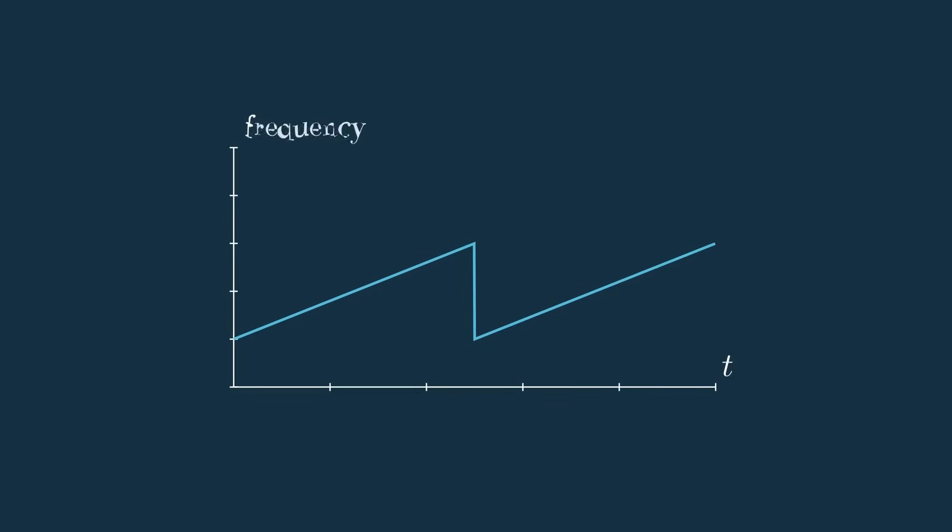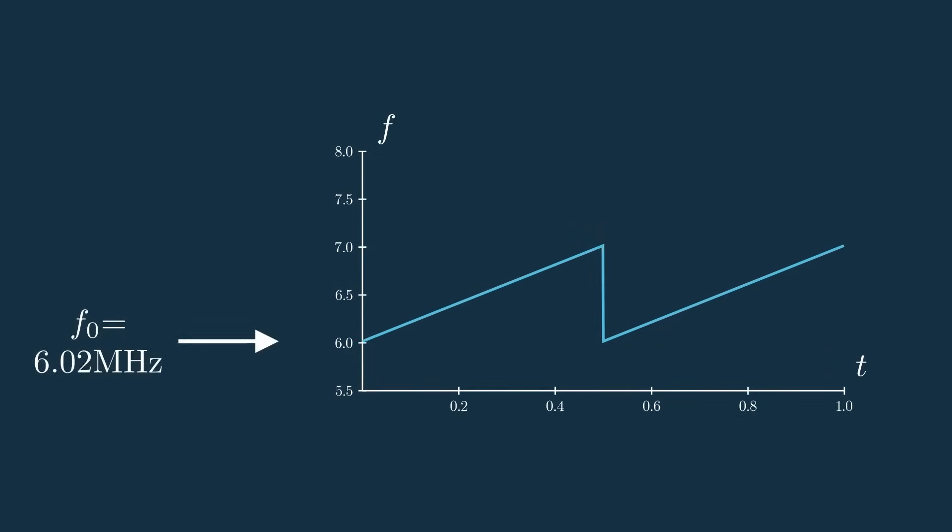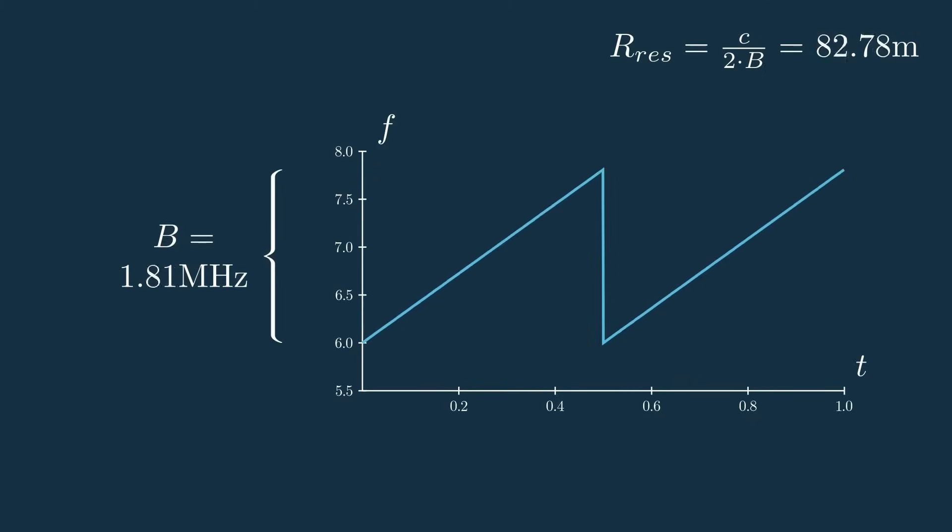Looking at this sawtooth plot, we have the frequency of our signal as a function of time, and I'll add some dummy units to illustrate the point. This ramp is also called a chirp, and how it's set has a large impact on our system. We can configure the chirp in a few different ways to have different performance metrics, like at what frequency we want to start ramping, how much frequency we want to cover, or in other words the bandwidth,